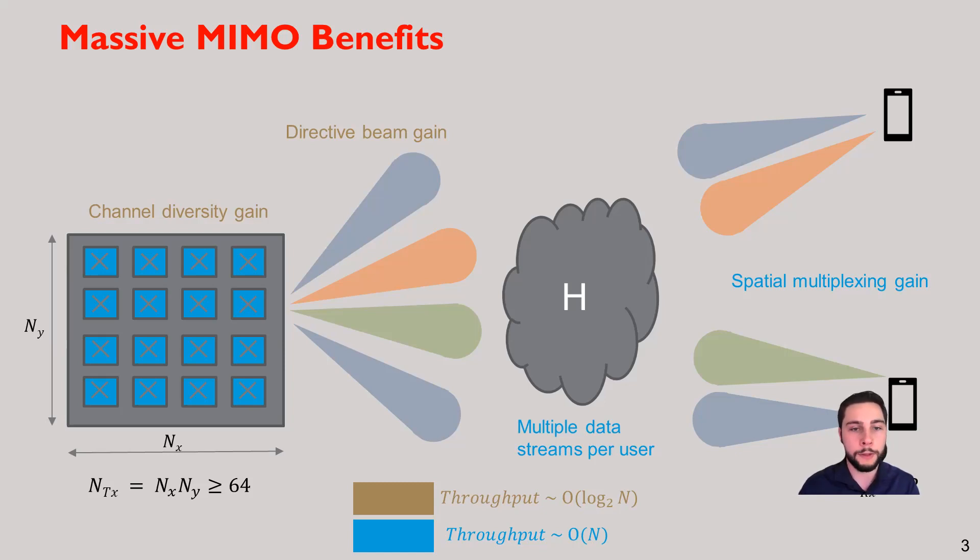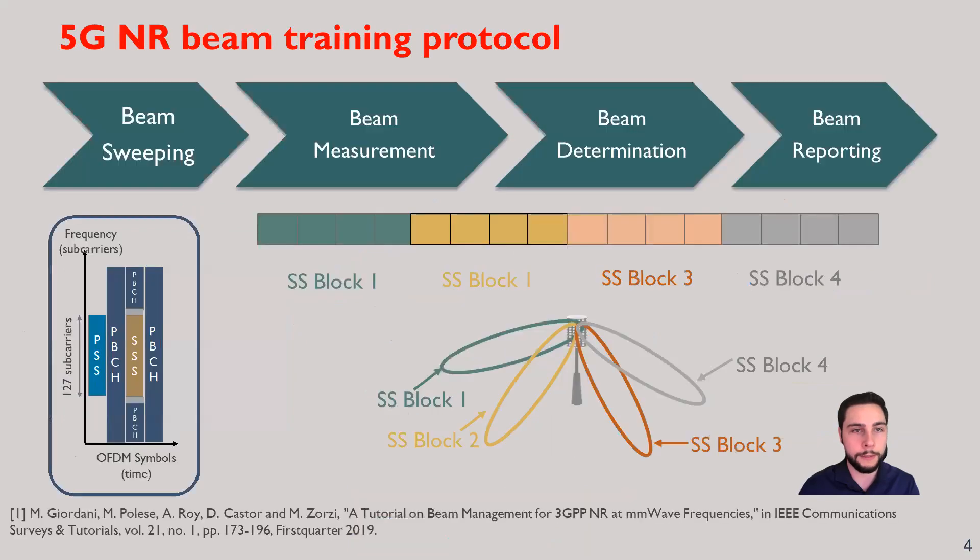5G attempts to do this by doing a training process known as beam training, which looks like this. First, it starts with beam sweeping, where a number of SS blocks, which are a defined training sequence, are transmitted with specific precoders in different directions. The UEs each will measure these various beams and determine which one is the strongest. It will then report back, along with some other information like the channel quality index, what was the strongest beam.